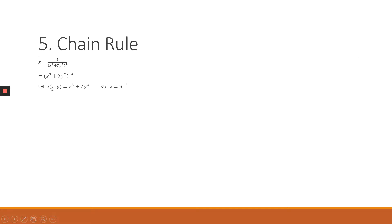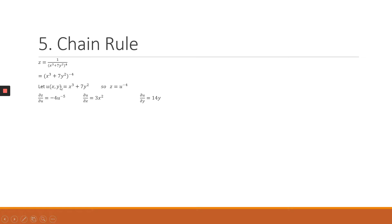To apply the chain rule, we introduce a new function u. Let u equal x cubed plus 7y squared — that is, the expression inside the bracket. Rewriting z in terms of u, we get z equals u raised to the power of minus 4. To apply the chain rule, we need the partial derivative of z with respect to u, the partial derivative of u with respect to x for the x-derivative, and the partial derivative of u with respect to y for the y-derivative.